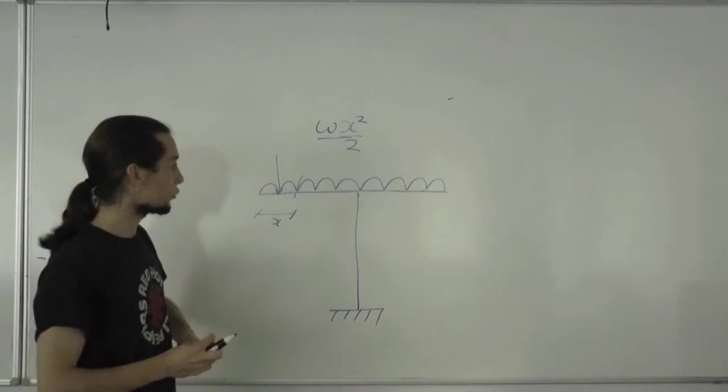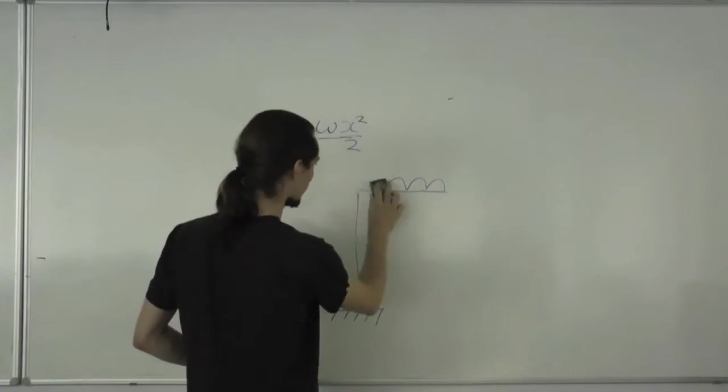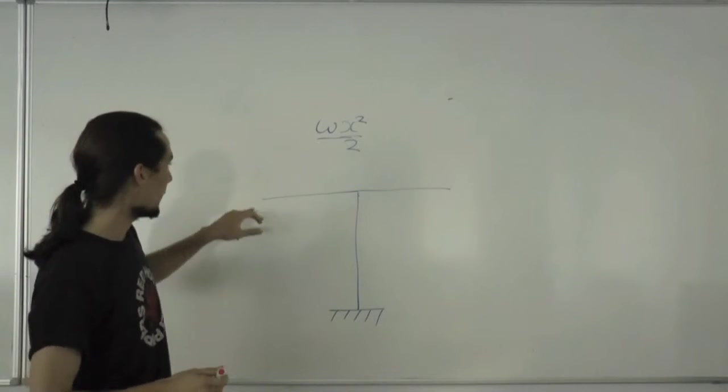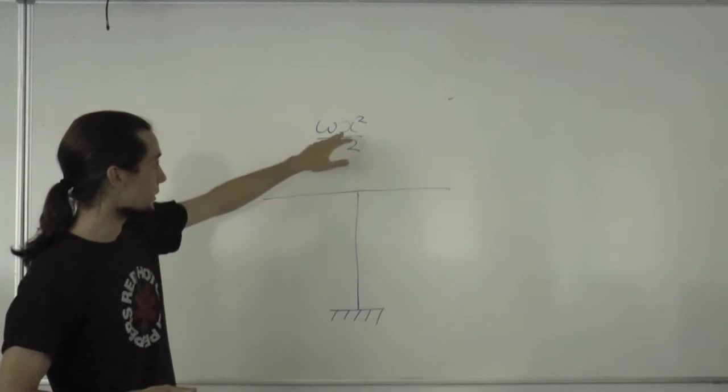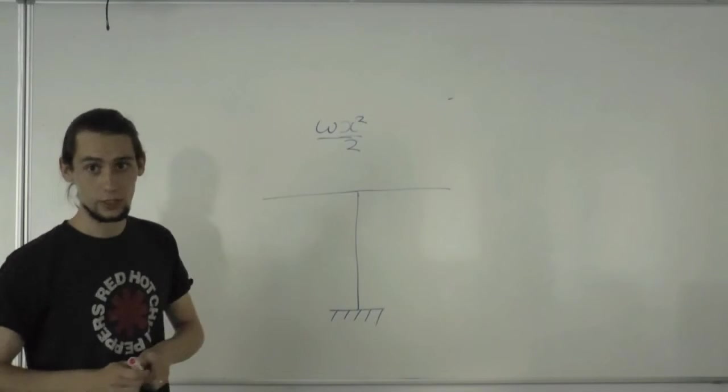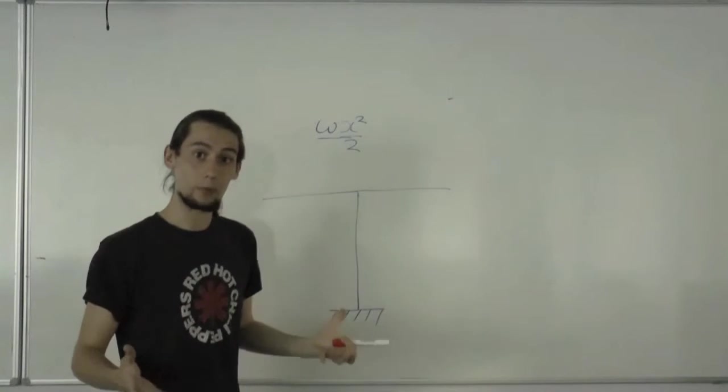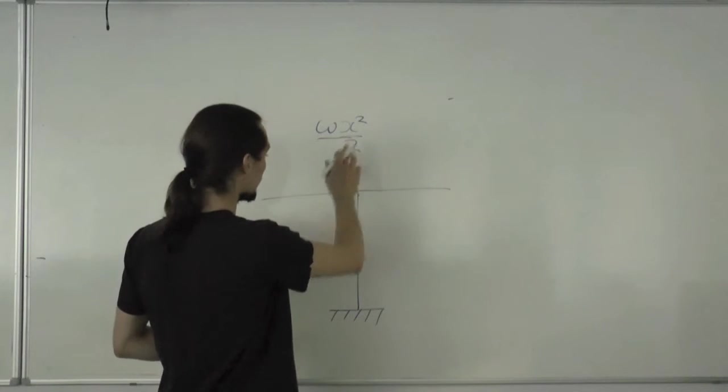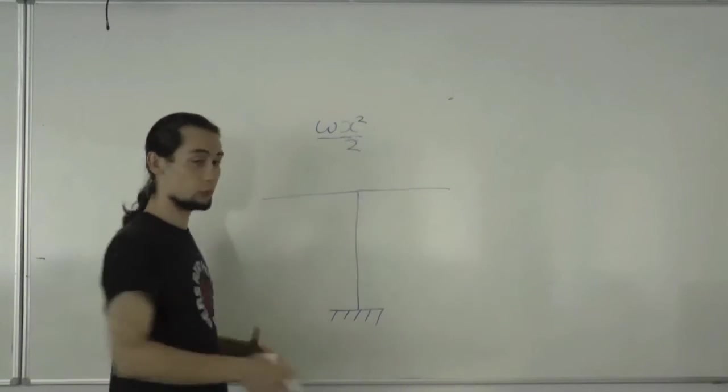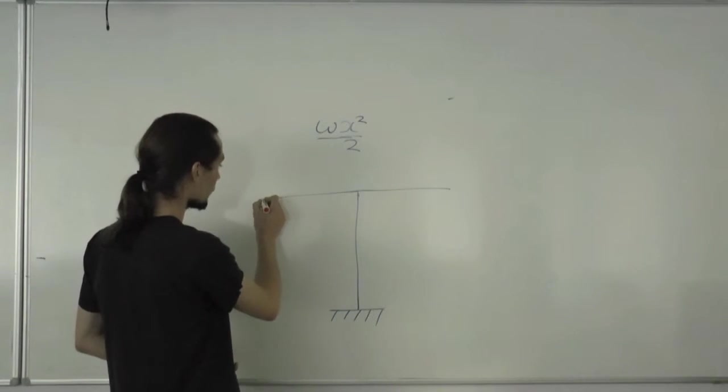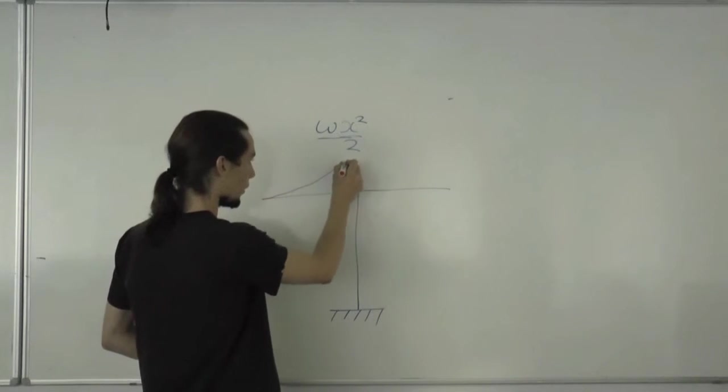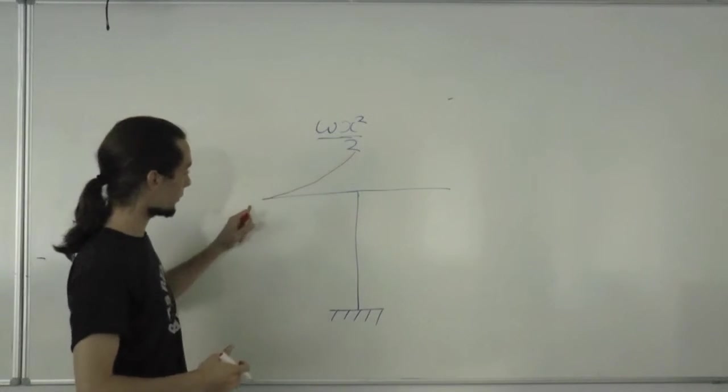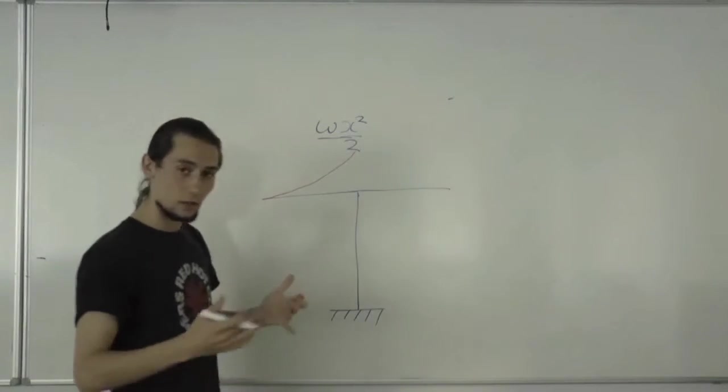With this we can start to construct the bending moment diagram. The interesting thing to note about how this equation will increase as x increases is that it's a square relationship. So we expect to see a parabola or parabolic shape to the bending moment diagram. As x increases, the moment is going to increase by a square term, so we're going to start off small and get bigger like that. That's the qualitative shape of the bending moment diagram from the end up until the support.